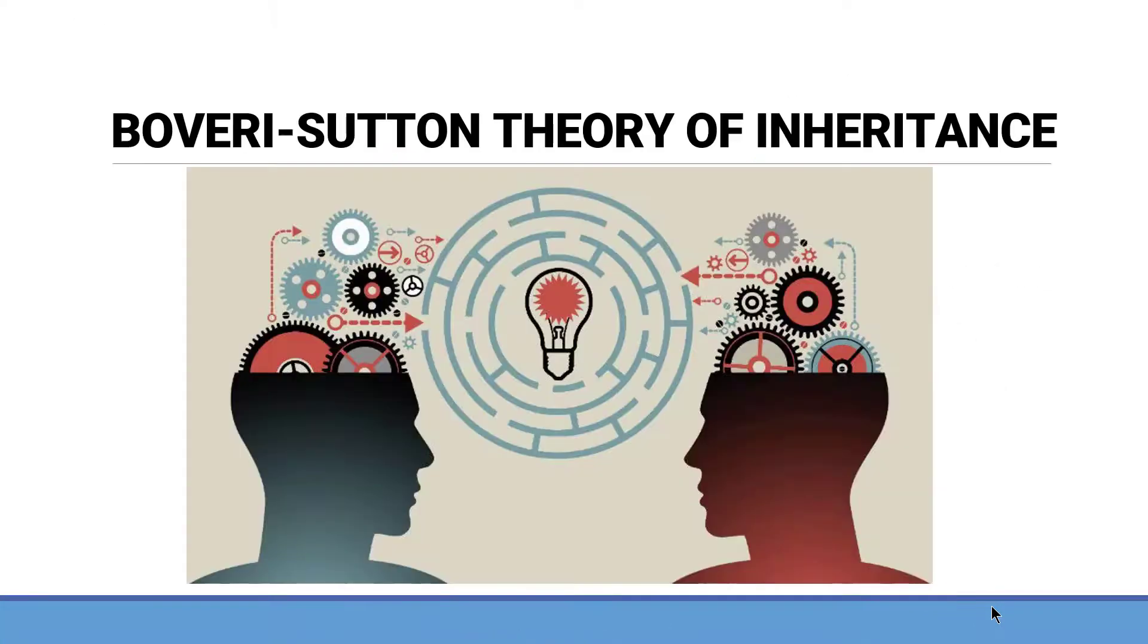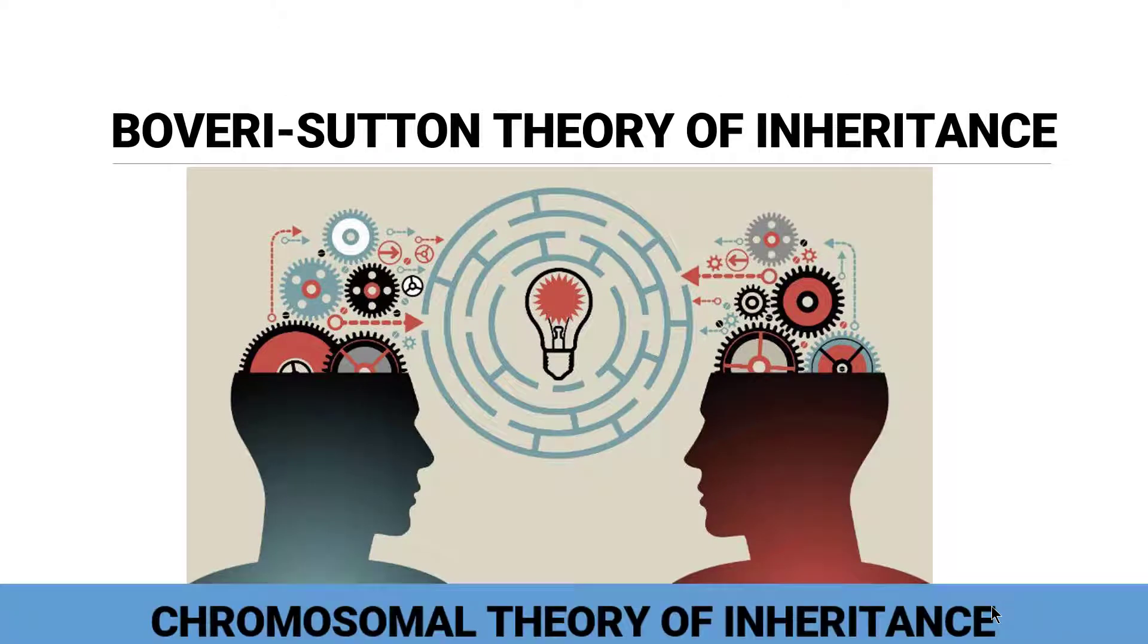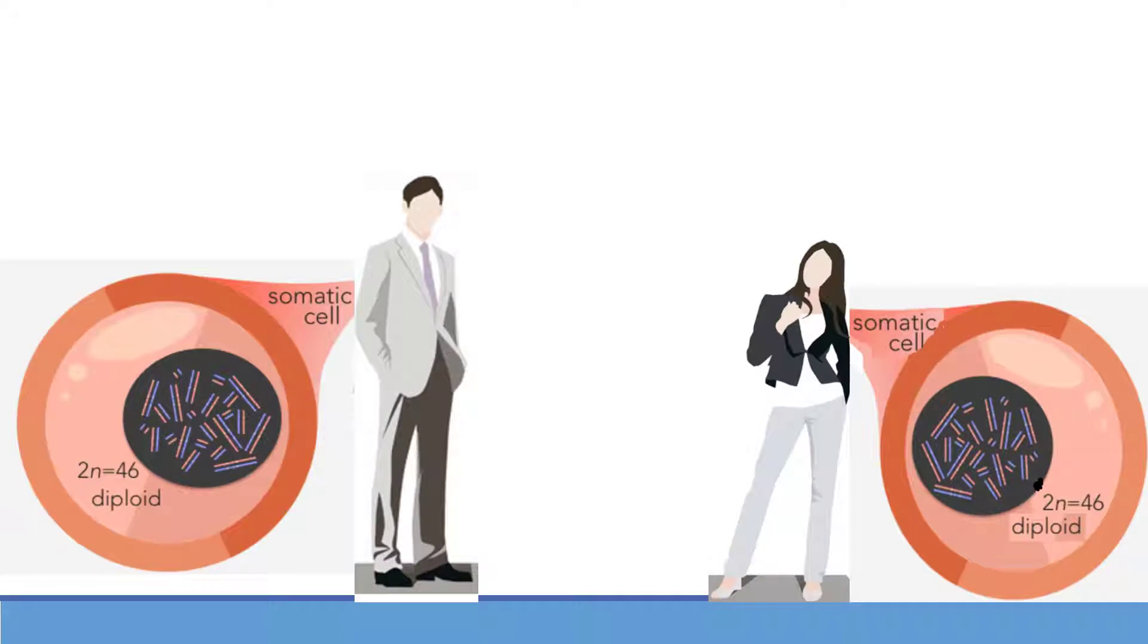Now by the combined study of these two scientists, the chromosomal theory of inheritance came into being. The Chromosomal Theory of Inheritance is also called the Boveri-Sutton theory of inheritance. It includes that chromosomes occur in matched pairs.